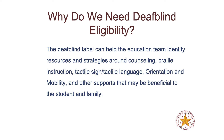Why do we need DeafBlind eligibility? The DeafBlind eligibility can help the team identify resources that might be helpful and strategies, including topics like counseling, braille instruction, tactile sign, tactile language development, orientation and mobility, and other supports that might be helpful to that student or family.